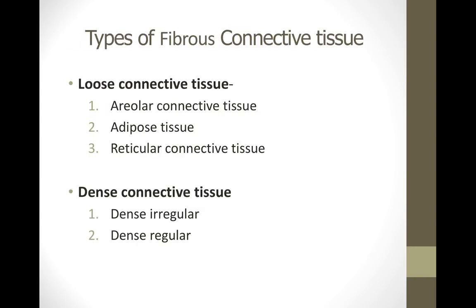The first category of connective tissue is fibrous or proper connective tissue, broken down into loose and dense. Loose is broken down into areolar, adipose, and reticular connective tissue. As the name implies, this tissue has very little or very loosely arranged protein fibers. Dense connective tissue, on the other hand, has a significant amount of protein fibers. Dense connective tissue is further categorized as regular or irregular, depending on how the protein fibers are organized inside the tissue.